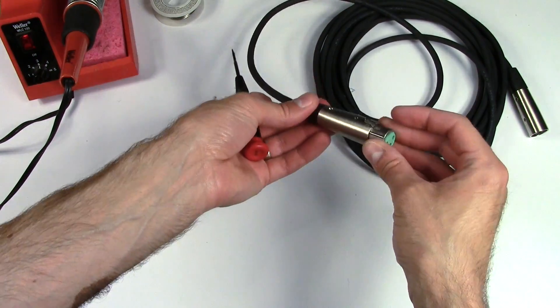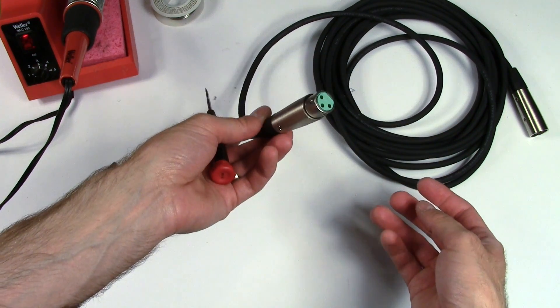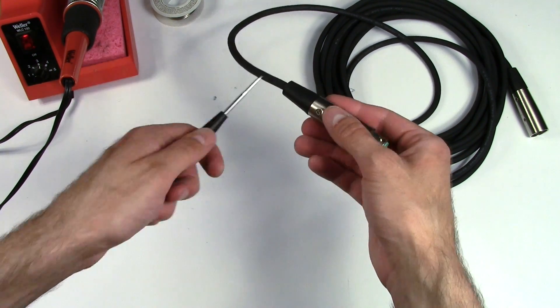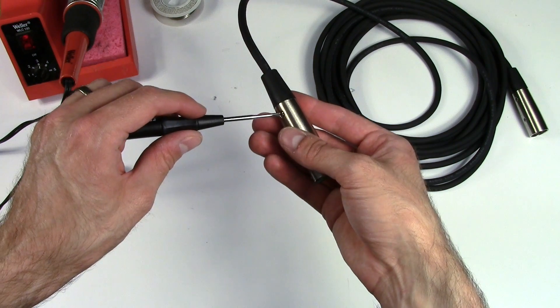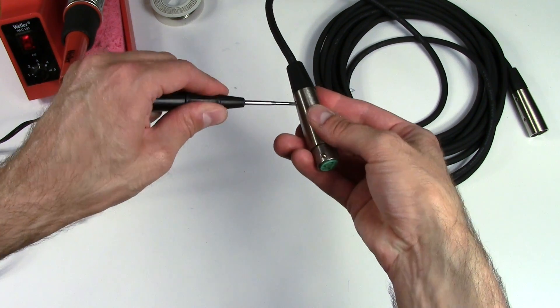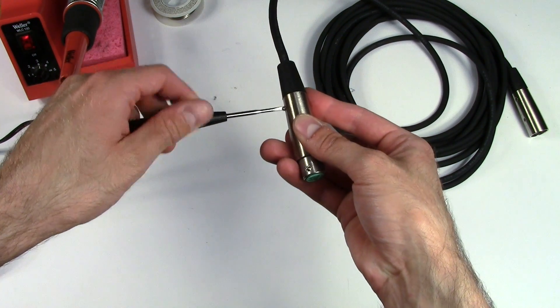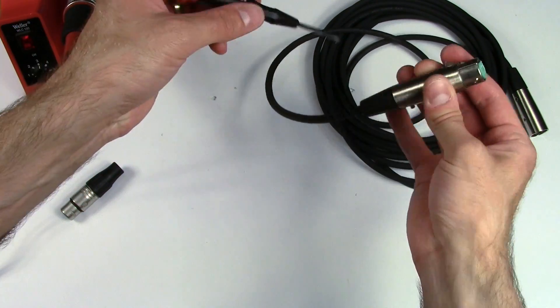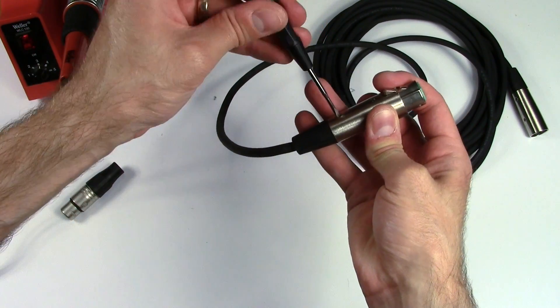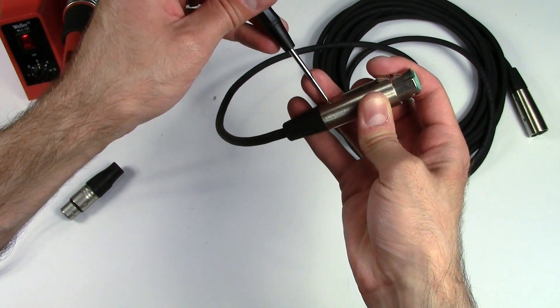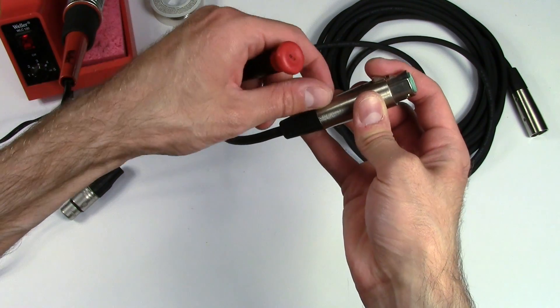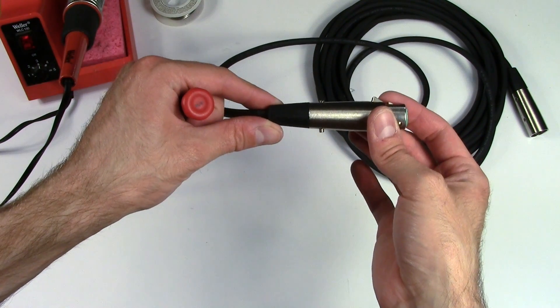Let's get started. With this type of XLR, this is one manufactured by Switchcraft and these come apart by use of a flathead screwdriver. You simply loosen these little screws on either side of the barrel. You don't need to take them all the way out, they're like these little plug screws. Just loosen them so that they're sticking out like that.